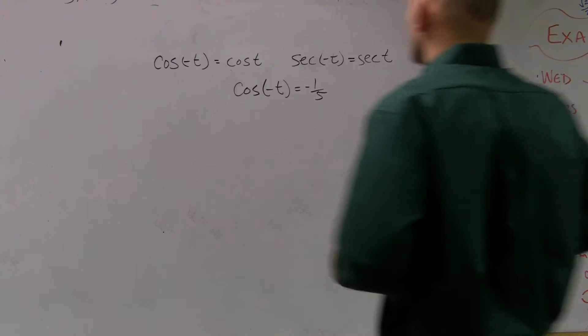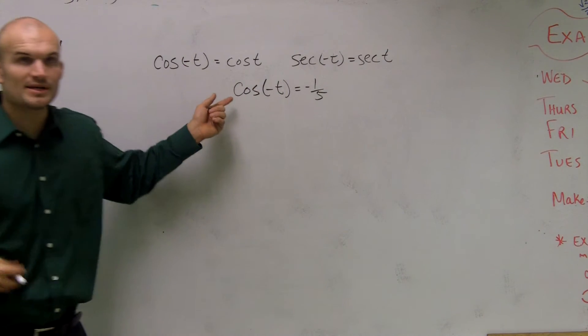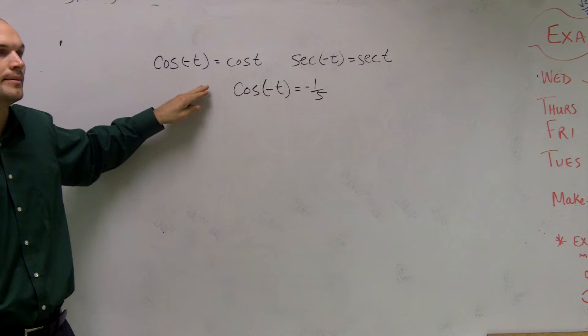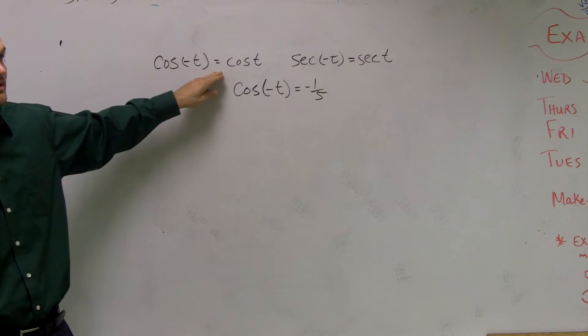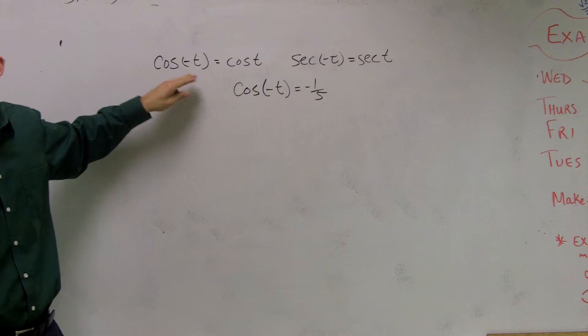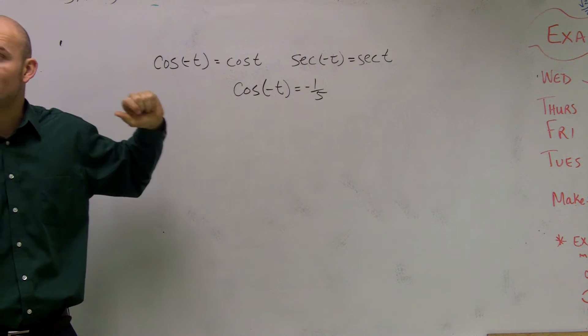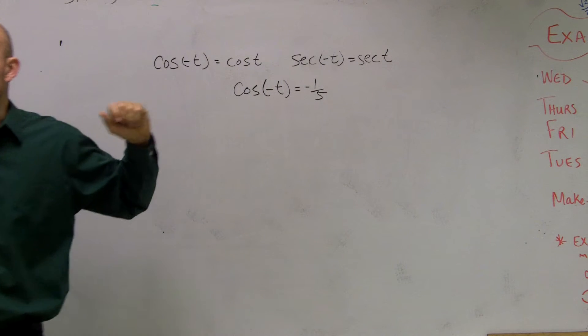These were the two properties in your even and odd that are in your book. This represents our even functions. So cosine and secant are what we call even functions, if you guys remember, our even functions.